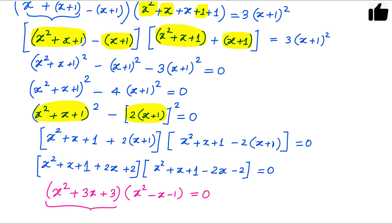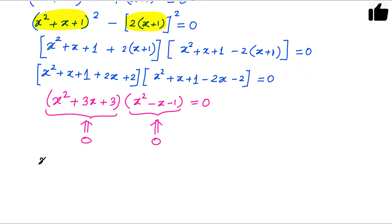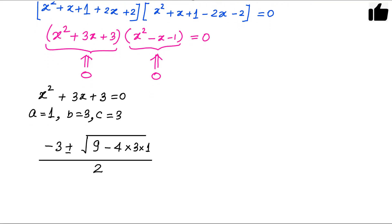Now we have two quadratic equations. Either x²+3x+3 = 0 or x²−x−1 = 0. For the first case, a=1, b=3, c=3. The solution is x = [−3 ± √(9−12)] / 2 = [−3 ± √(−3)] / 2, which gives imaginary roots.